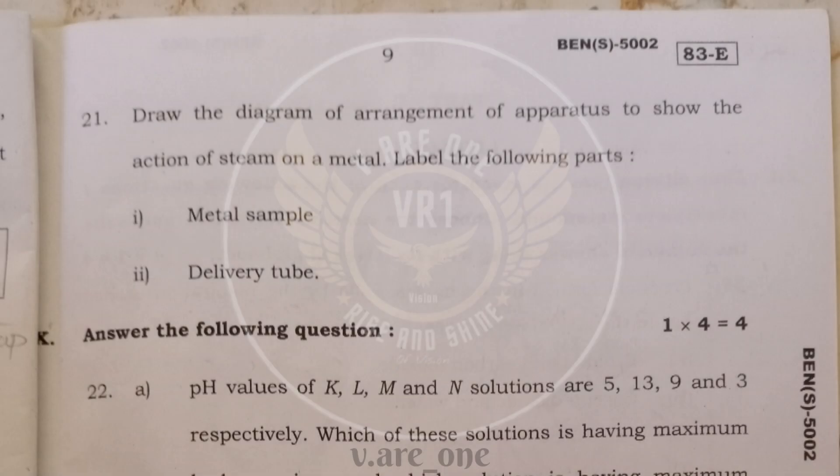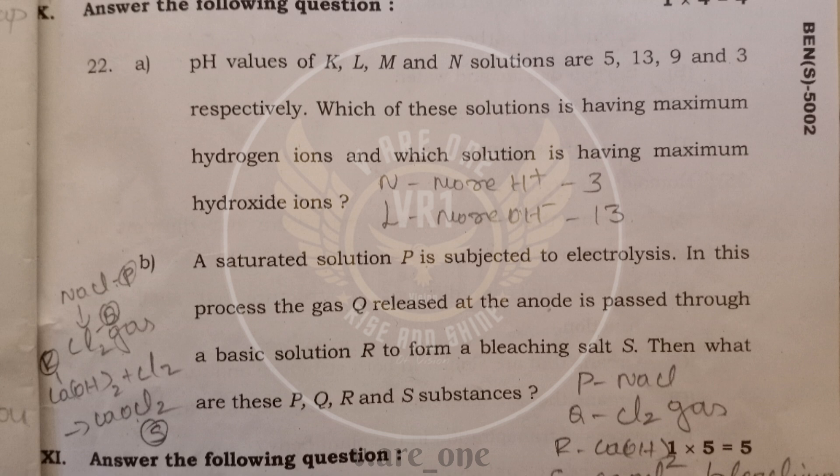21st question, you need to write the diagram. And 22nd, they have given a pH value. K is 5 and L is 13. M is 9 and N is 3. Here, N having more H+ ions, hydrogen ions. And L having more OH- ions. Means hydroxide ions. Because N it is 3 and L it is 13.